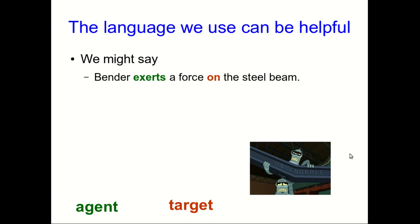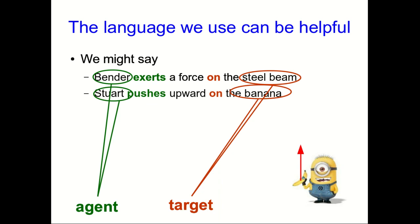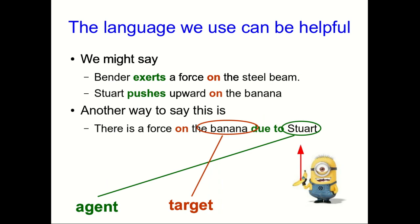The language that we use here is important and can be very helpful. And I encourage you to use language quite carefully when you're talking about forces. You should make it clear whenever you're talking about a force what its agent is and what its target is. So we might say that Bender exerts a force on the steel beam. We're saying that Bender is the agent of this force, and the steel beam is the target of the force that we're talking about. Likewise, we could say that Stewart is pushing up on a banana, and so Stewart is the agent and the banana is the target. We could say this same thing by saying that there is a force on the banana due to Stewart. There are various other phrases along these lines, but the phrases should make it clear what object, what physical thing is the agent of the force, and what other physical thing is the target of the force.